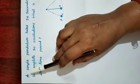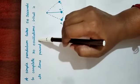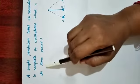Let us read the question. A simple pendulum takes 54 seconds to complete 30 oscillations. What is its time period?